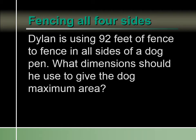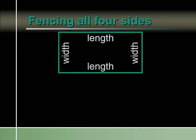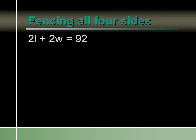We have to use 92 feet of fence and we want to give the maximum area for this dog, so we have to figure out the dimensions of the fence. Remember, area is length times width. But perimeter — which is what we're using the fence for, because the fence is the perimeter around the area — is two times the width plus two times the length. They told us that perimeter equals 92 feet, so 2L plus 2W equals 92.